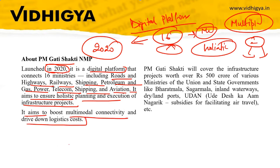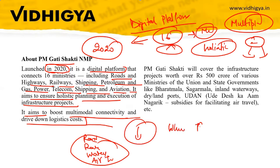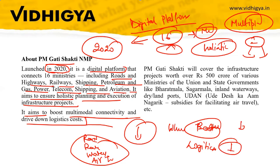PM Gati Shakti aims to boost multimodal connectivity — meaning road, railway, waterway, and airway transport — and drive down logistics costs. Through this plan, project implementation will become easier and projects will be completed faster, reducing logistics costs because better infrastructure means less delay in transport. PM Gati Shakti will cover infrastructure projects worth over Rs. 500 crores of various ministries of the Union and State Governments.